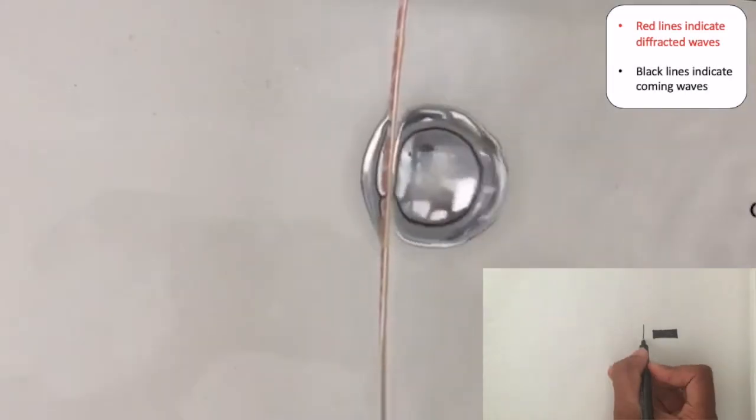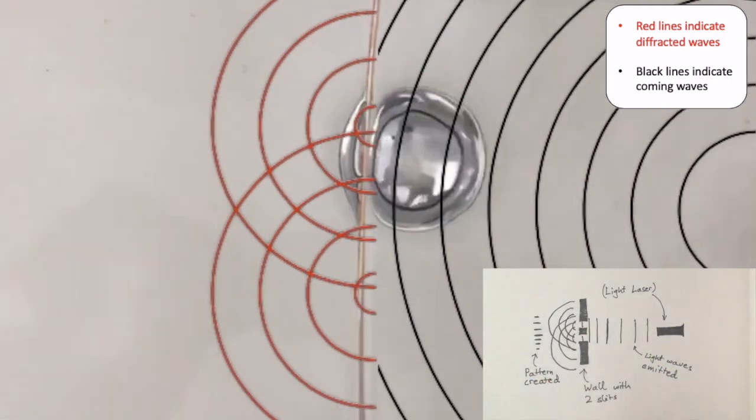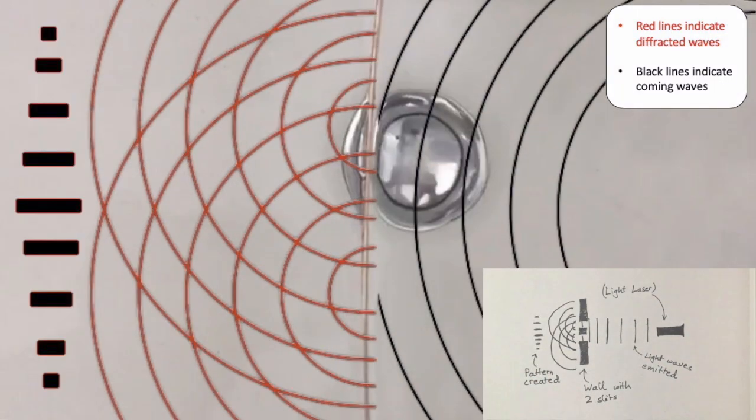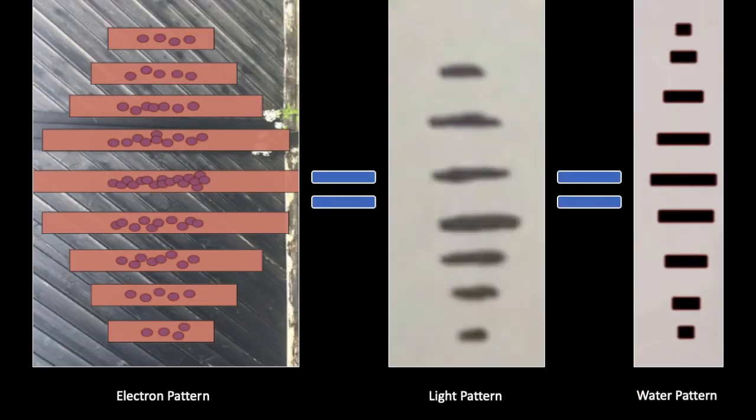To explain this, we can get a double-slit experiment with light or the ripples on water which are both waves. Then we would see a pattern like these. This is called wave behavior. If electrons create patterns like these, they are also considered as waves.